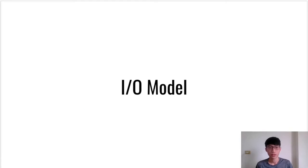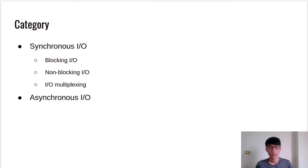In the first section, I will introduce different I/O models in Linux. As I/O models, we can roughly divide them into synchronous I/O and asynchronous I/O. More specifically, synchronous I/O includes at least three kinds of model: blocking I/O, non-blocking I/O, and I/O multiplexing. The details will be mentioned in the following pages.